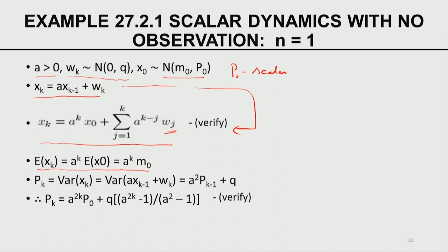The mean of the state at time K is A to the power of K times M naught. The variance of the state X_K at time K, P_K, is equal to the variance of A times X_{K-1} plus W_K. If you multiply a random variable by a constant, you multiply the covariance by the square of the constant. The variance of the sum is the sum of the variances since the two quantities are uncorrelated. Therefore, the variance of the state at time K is given by this expression, and X_K is essentially the forecast because I am simply using the model. A to the power K times M_K is the mean of the model forecast, and A² P_{K-1} plus Q is the variance associated with the model forecast.